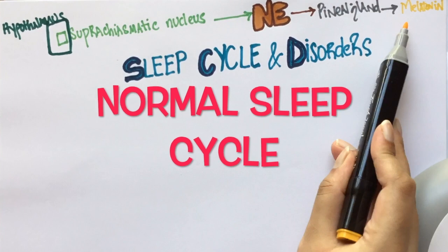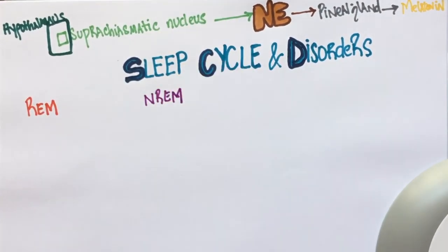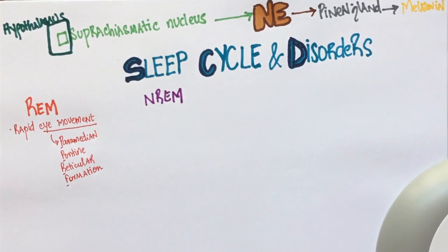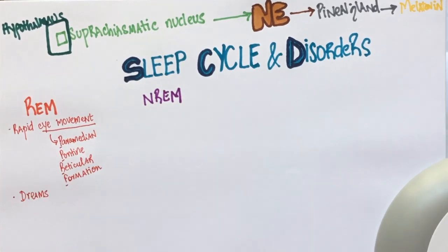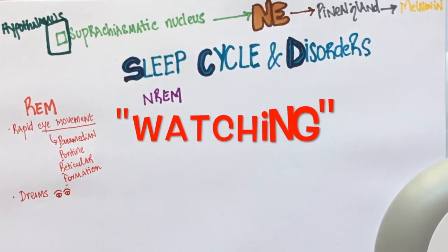A normal sleep cycle is divided into REM and NREM. REM stands for rapid eye movement. These eye movements are controlled by the paramedian pontine reticular formation. This is the stage where we get dreams. It's almost like your eyes are moving as they're watching the dream.